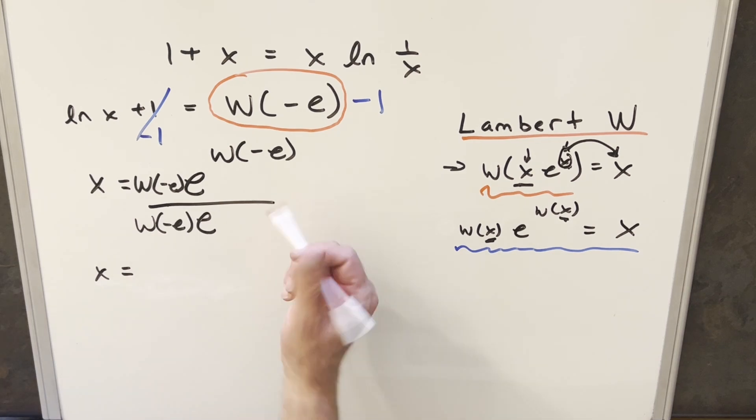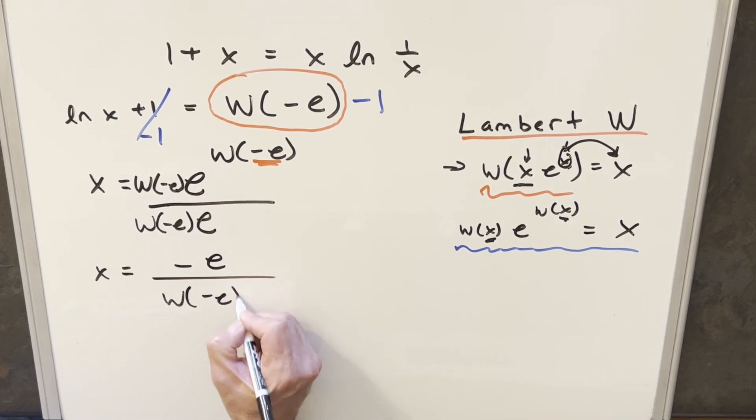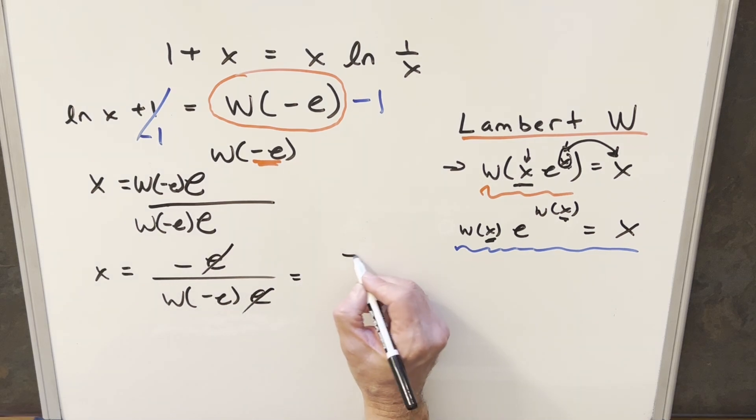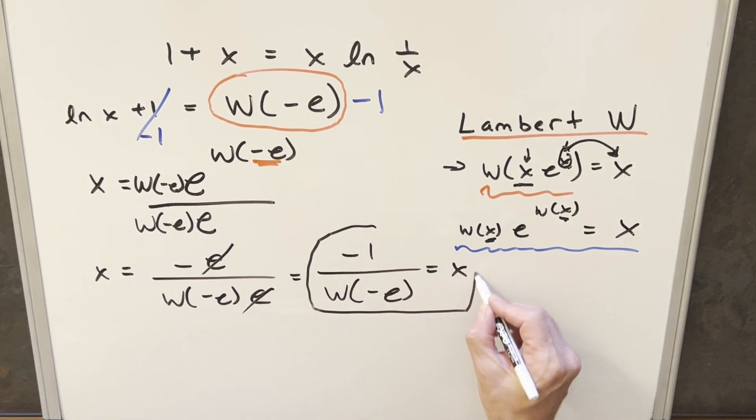So in this case, the something is going to be just this minus e. So for this numerator, we get our minus e over Lambert W minus e over e. But then I can cancel e's here. And so for my value of x, we just have minus one over Lambert W minus e. And this right here, this is a kind of a solution, maybe not that satisfying, but this is one way to represent this solution.